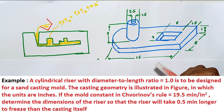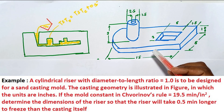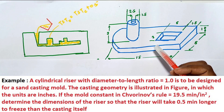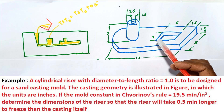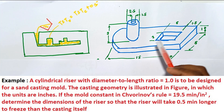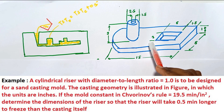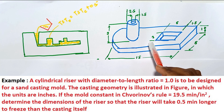In this problem, a cylindrical riser with the diameter to length ratio equal to 1 is to be designed for sand casting. The unit is inches. If the mold constant is equal to 19.5 minutes per square inch, determine the dimensions of the riser so that the riser will take 0.5 minutes longer to freeze than the casting itself.